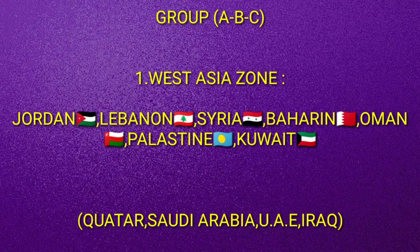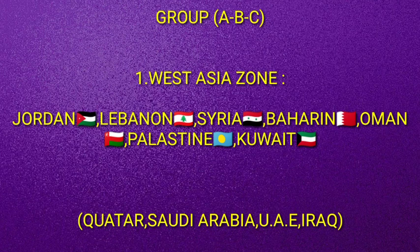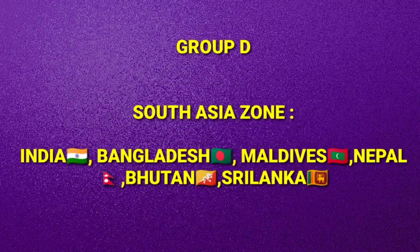Now we will discuss which countries belong to which region. For Groups A, B, and C, teams come from West Asia zone. The countries in West Asia zone are Jordan, Lebanon, Syria, Bahrain, Oman, Palestine, and Kuwait. You may wonder where Qatar, Saudi Arabia, UAE, and Iraq are — they got AFC Champions League direct slots, so they are not able to participate in AFC Cup, as they are the top five of the West Asia zone.